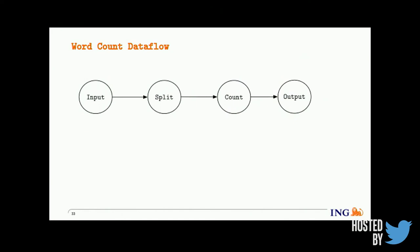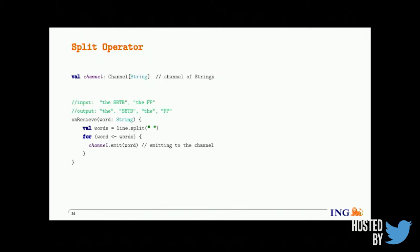As an example, let's look at word count — popularized by the MapReduce paper. We read a stream of sentences as input with two operators: split and count. The split operator splits input into words and emits them into an output channel. The count operator receives words downstream and outputs them to an output channel.